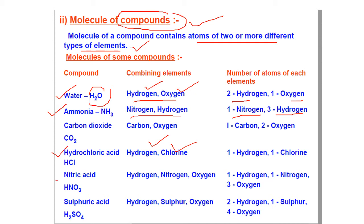For example, nitric acid and sulfuric acid — you can see there are many atoms. In sulfuric acid, there are two hydrogen, one sulfur, and four oxygen. This is how a combination of more than two atoms combine together to form a compound.